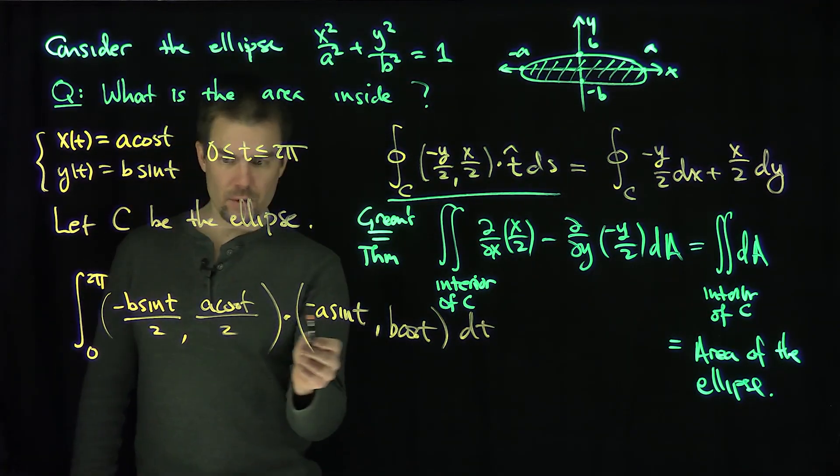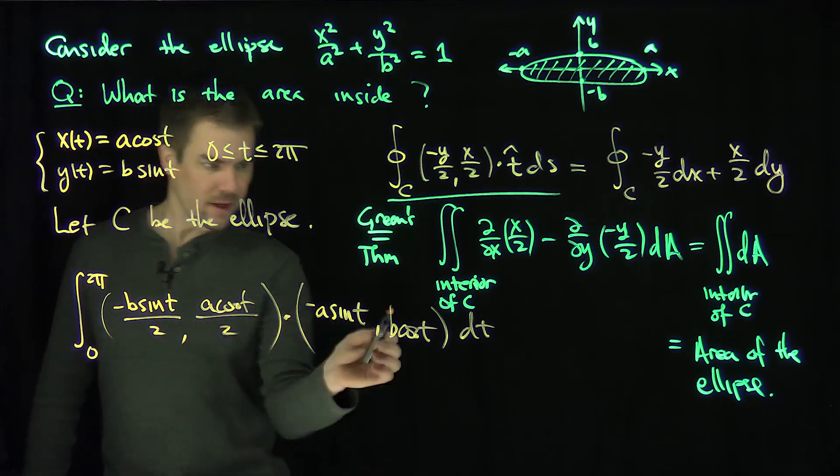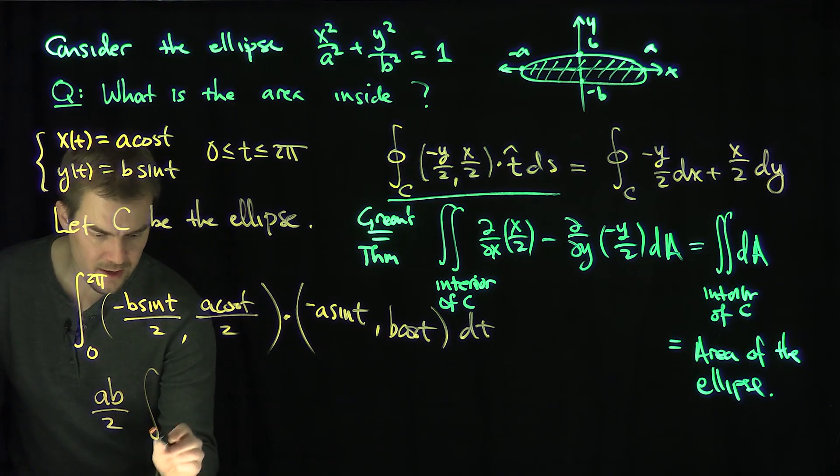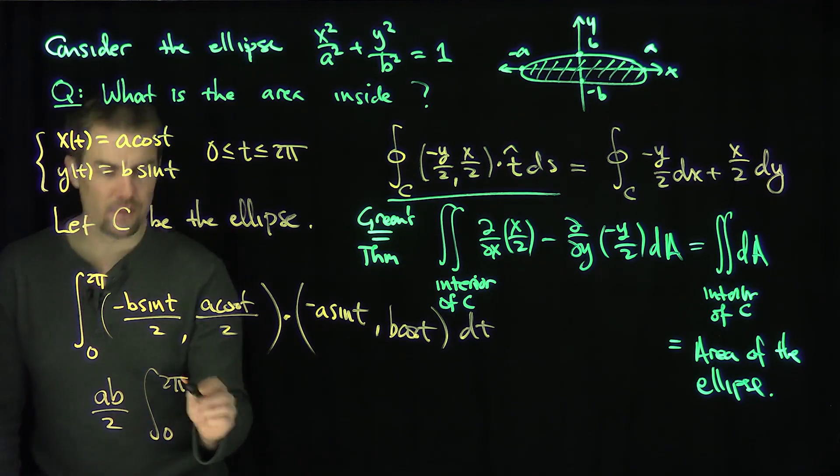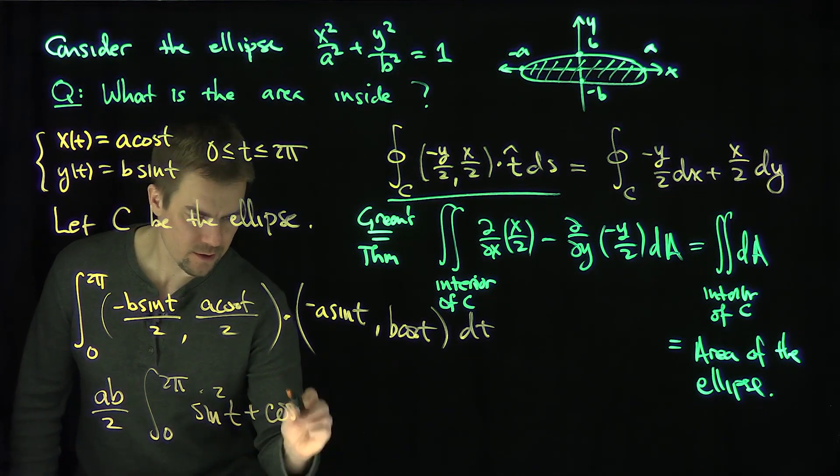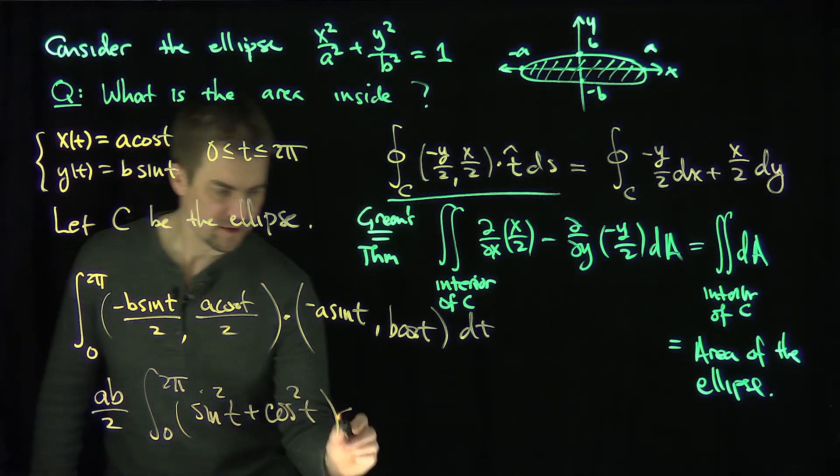So let's do the dot product. Everything is a factor of 2, and then I'm going to have a b times a and a b times a. So I'm going to have ab over 2, common to everything. Then the integral between 0 and 2 pi of sine squared of t, sine squared of t, plus cosine squared of t, dt.